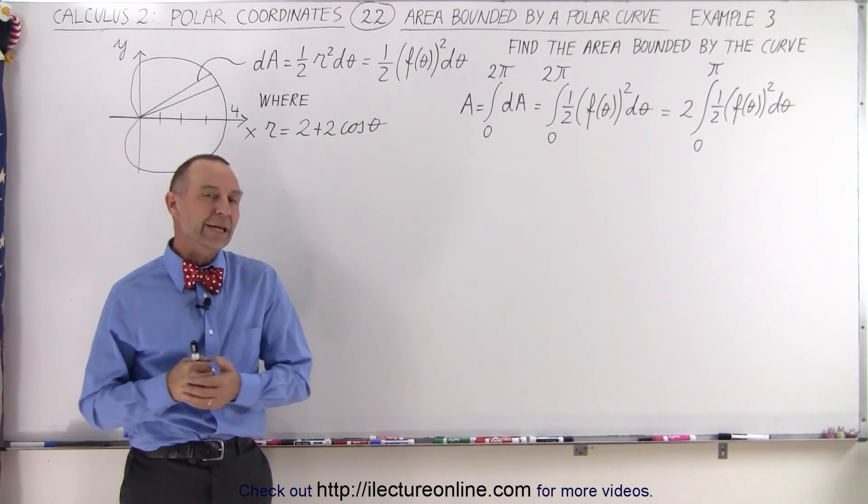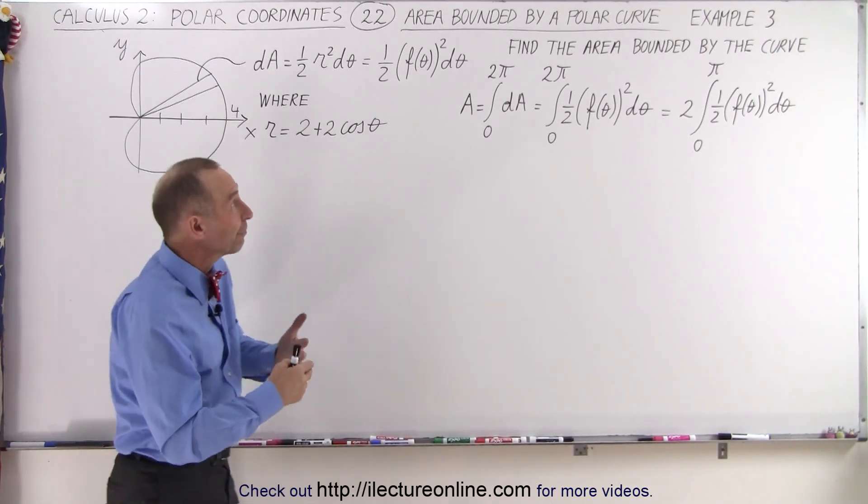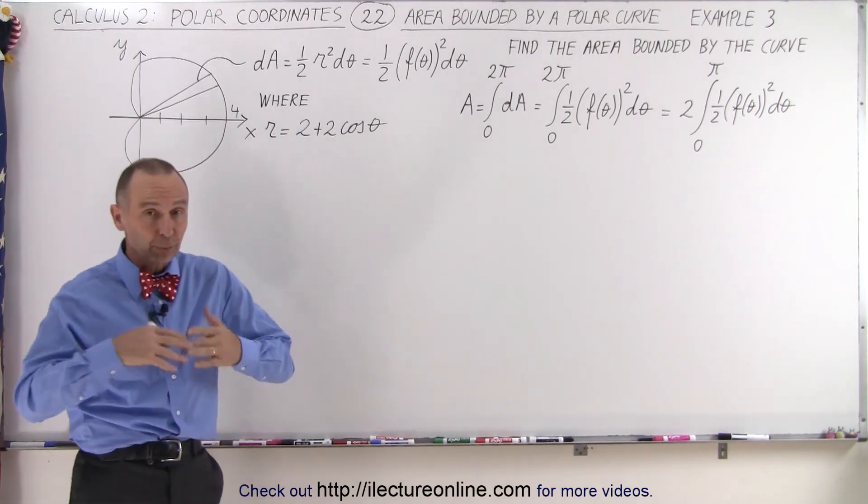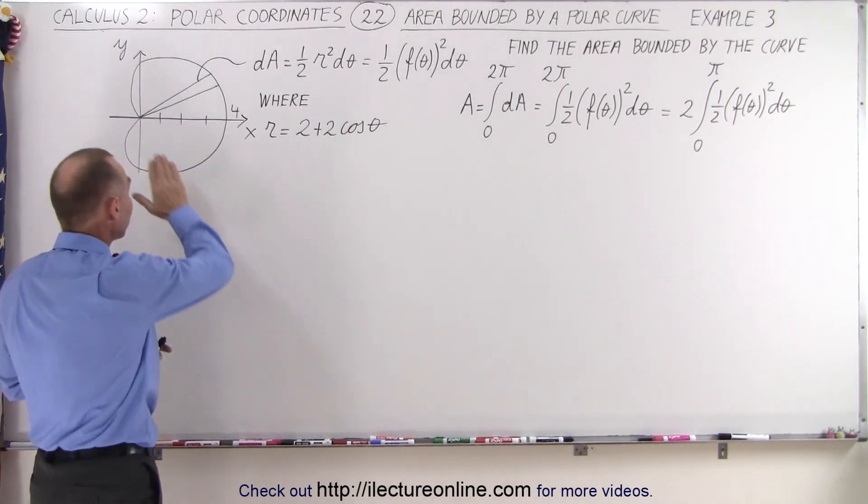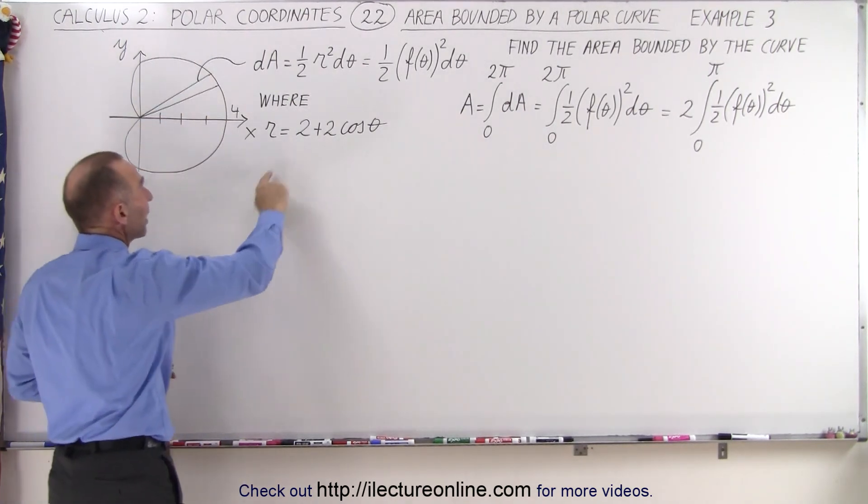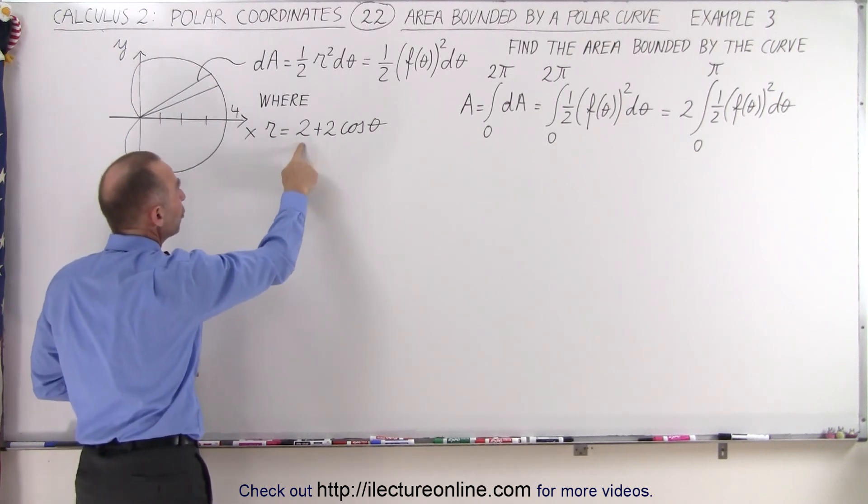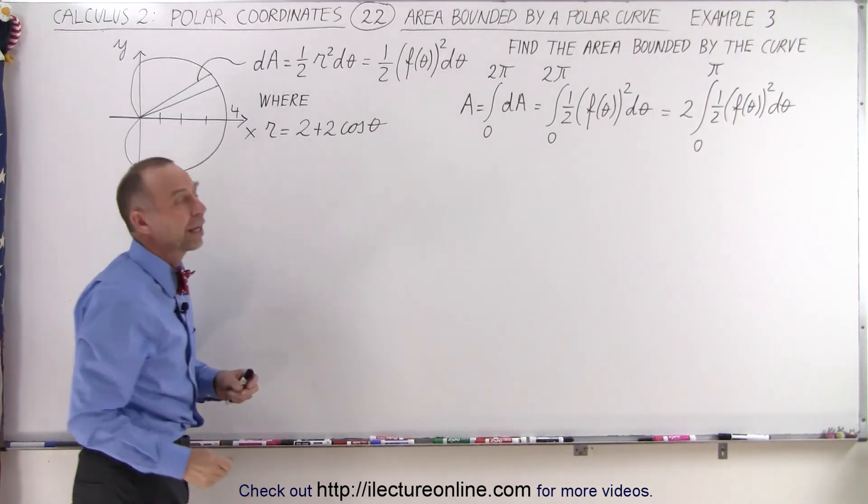Welcome to ElectronLine. Here's our next example of how to find the area bounded by this polar curve. In this case, we want to find the entire area defined by the equation r equals 2 plus 2 times the cosine of theta.